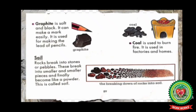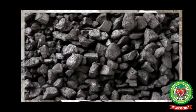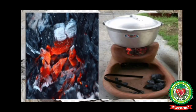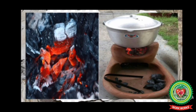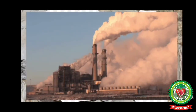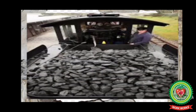The next one is coal. Coal is used to burn fire and is used in factories and homes. Look at the picture of coal — it is a soft black rock used as fuel. In villages, people use coal as fuel to cook food. It is also used in factories and it helps to run trains.